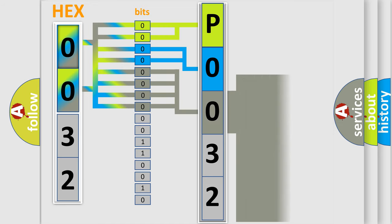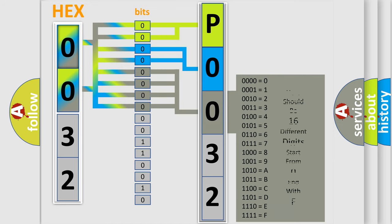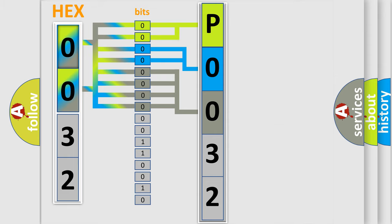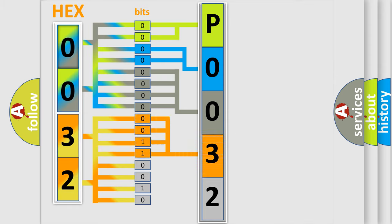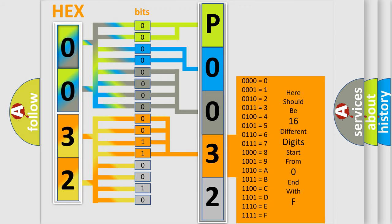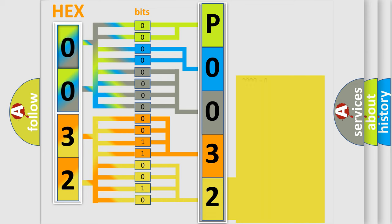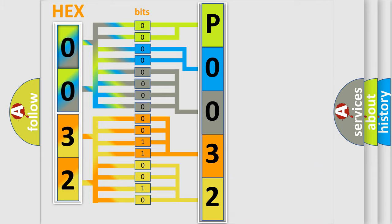The second byte is composed of a combination of eight bits. The first four bits determine the fourth character of the code, and the combination of the last four bits defines the fifth character. A single byte conceals 256 possible combinations.